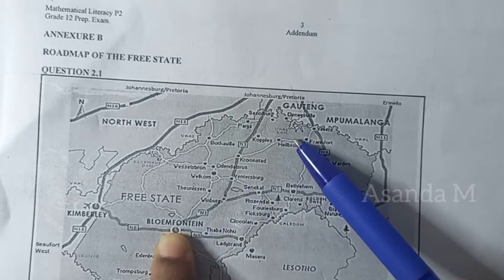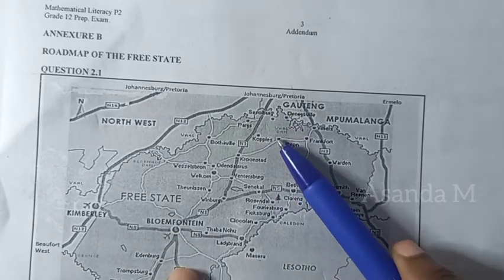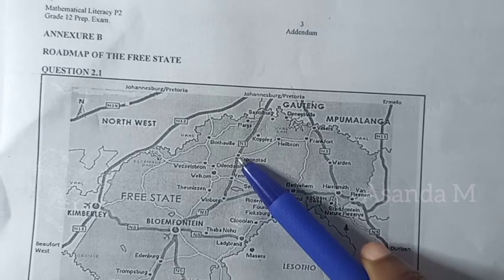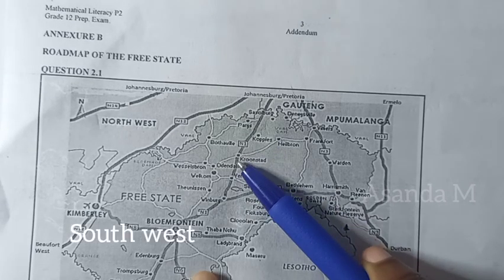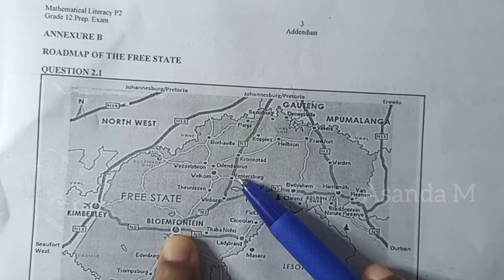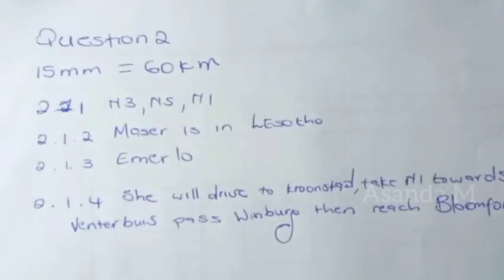From Heilbron, Sarah will follow the road to Kroonstad, and then take the N1, passing through Ventersburg and Winburg, and she will reach Bloemfontein.